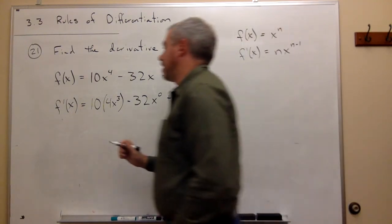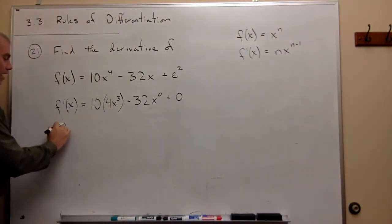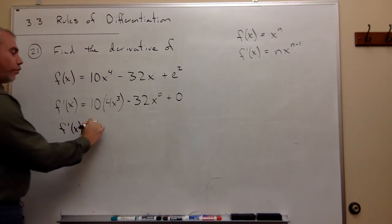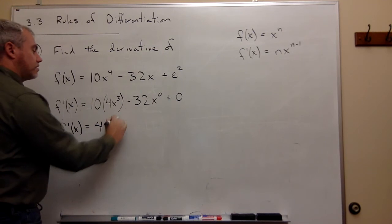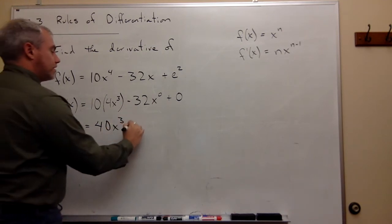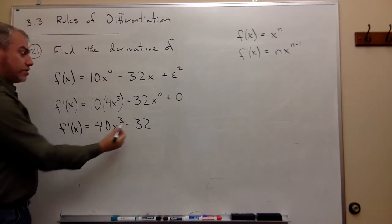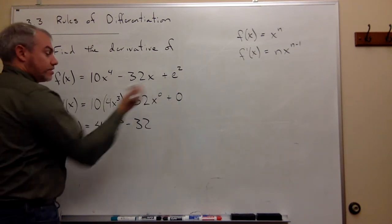Now we can multiply this out, make it look a little prettier. I have f prime of x equals 40x cubed minus 32. Well, x to the 0 is just 1, so this is just minus 32 plus 0.